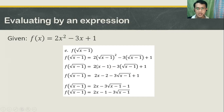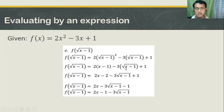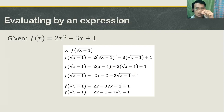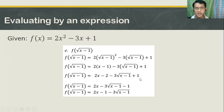Then perform the operation again. You're going to distribute. 2 times x, you get 2x. 2 times negative 1, that's negative 2. When you multiply negative 3 times the quantity of the square root of x minus 1, just simply write the 3 outside because you cannot distribute into a square root. Since 3 is a monomial and the quantity x minus 1 is inside a square root, the constant 3 should be placed outside the square root. So that's negative 3 square root of x minus 1, plus 1.